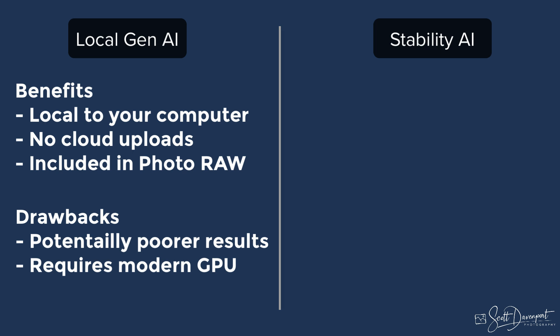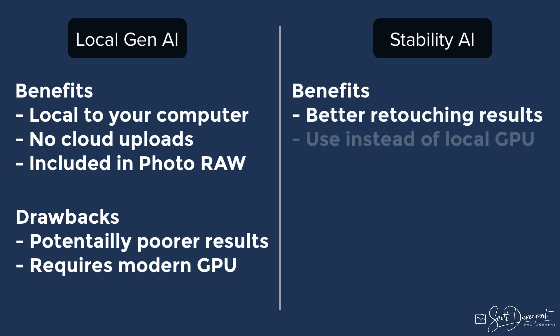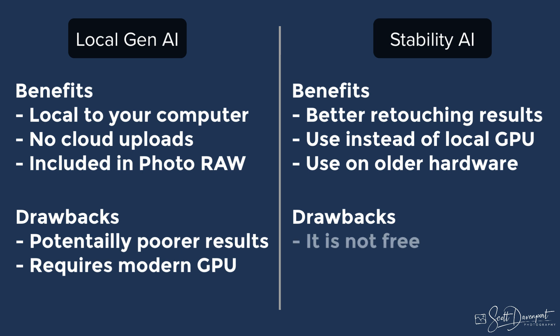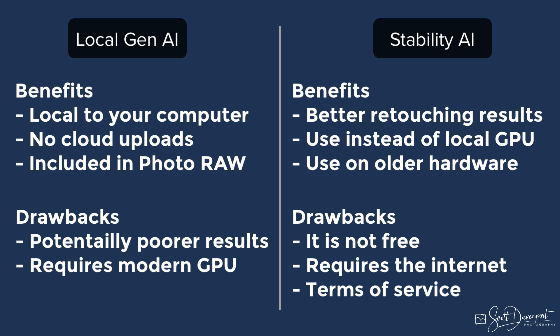What about Stability AI? The benefits: results in most cases are better, even on systems that have a strong GPU, and you can still use it on older hardware since you're farming out AI computation to the cloud. The drawbacks: it's not a free service and will cost you money to use. It requires an internet connection, and you are uploading your images to the cloud, which may mean Stability AI could use your images for further training and improvement of its own service. Terms and conditions are important to read when considering this cloud service.